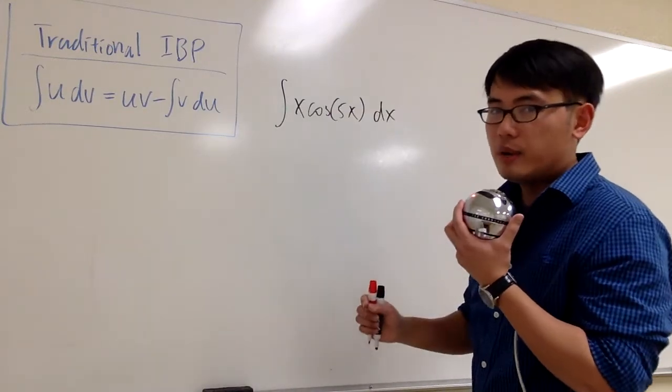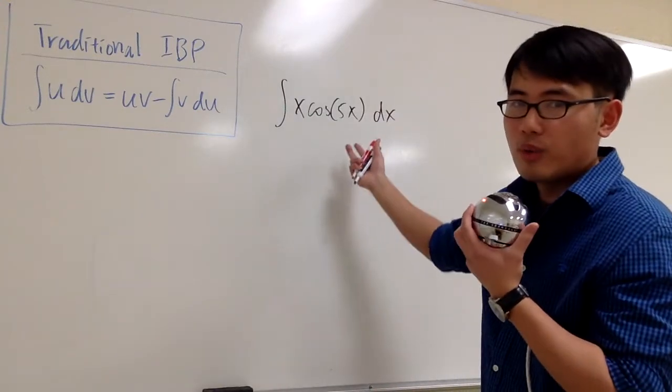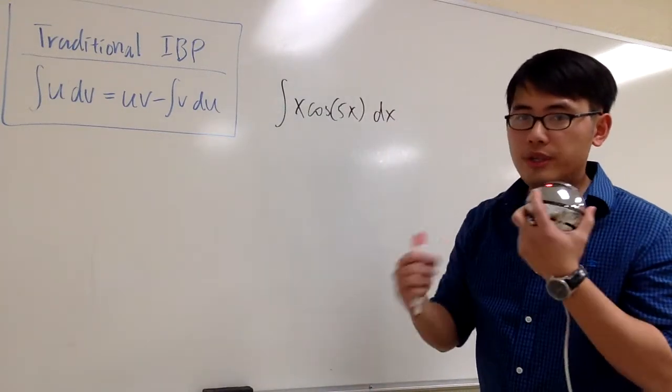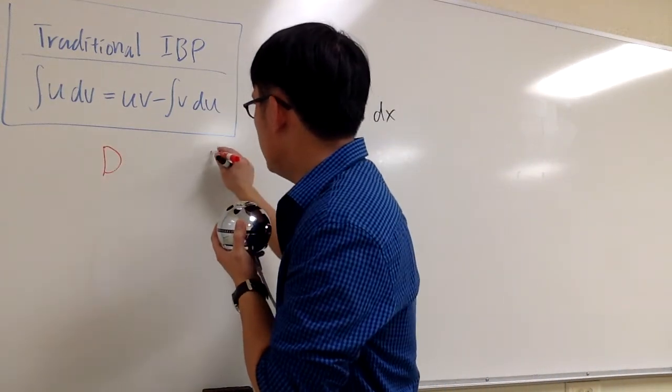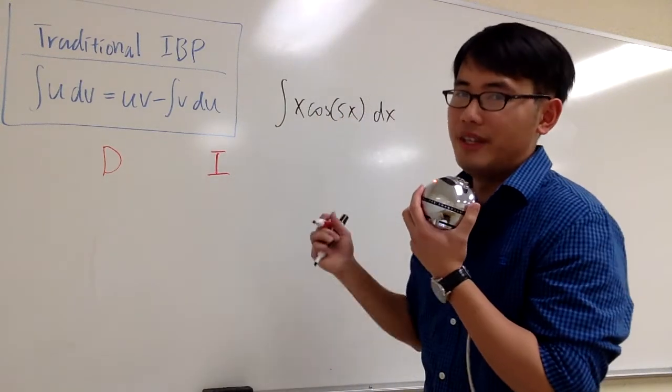The idea now is, let's forget about all these notations. Let's just look at our integral and worry about what do we need to differentiate and what do we need to integrate. So I'm going to write down the D and the I. My students call this the DI method for integration by parts.